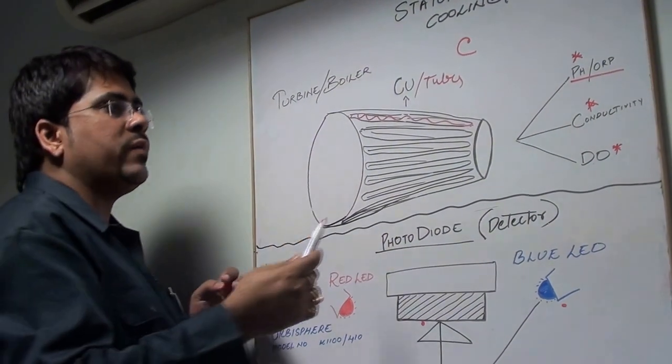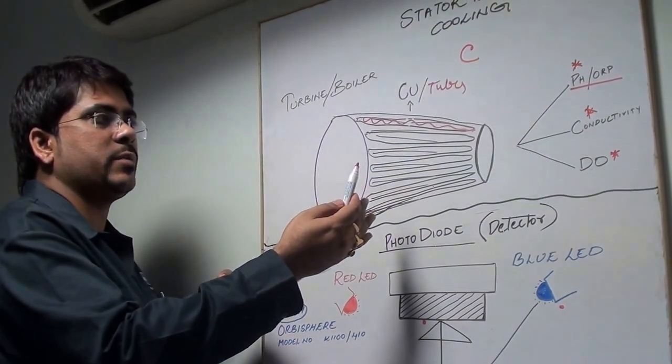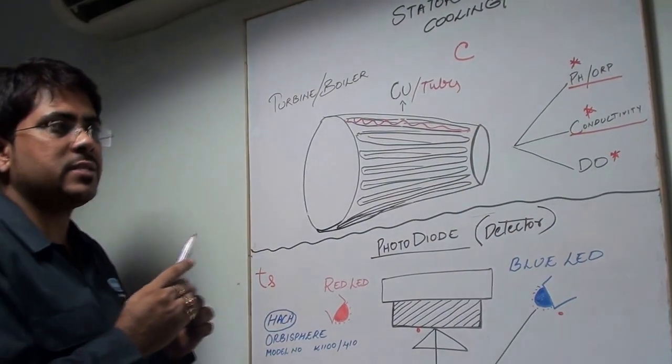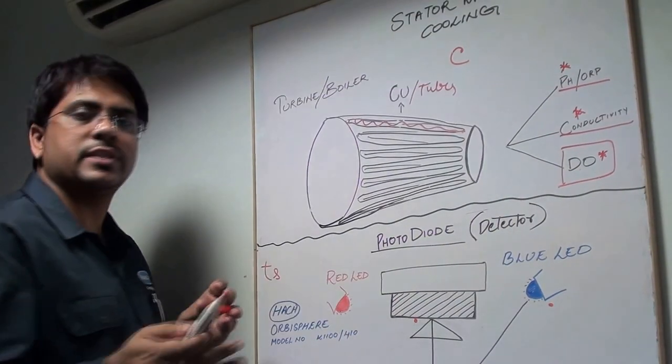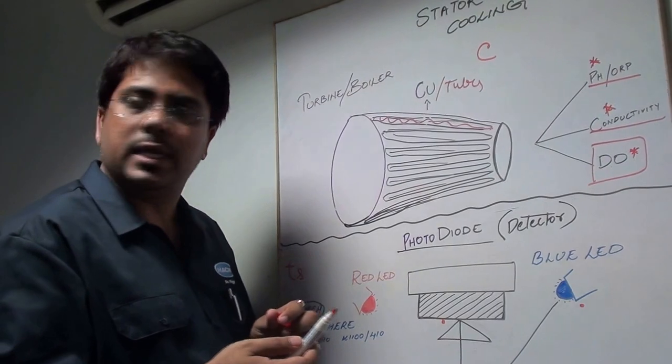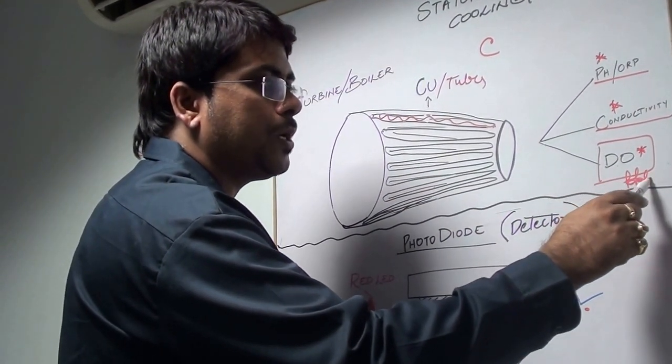Whether there is any leakage or other chemicals getting contaminated, we should measure conductivity. But last but not least, the most important measurement I just explained is dissolved oxygen in the range of PPB, very low parts per billion.